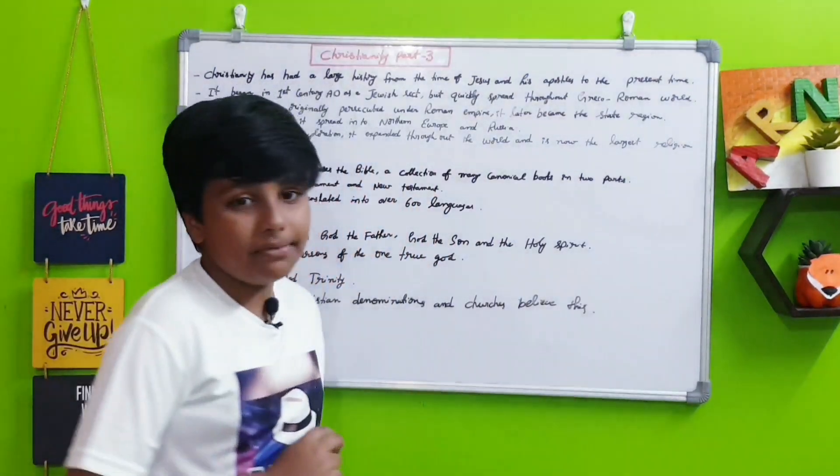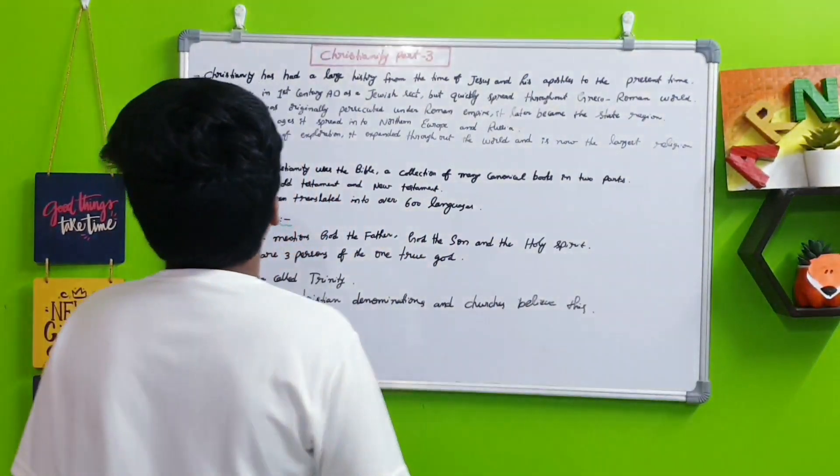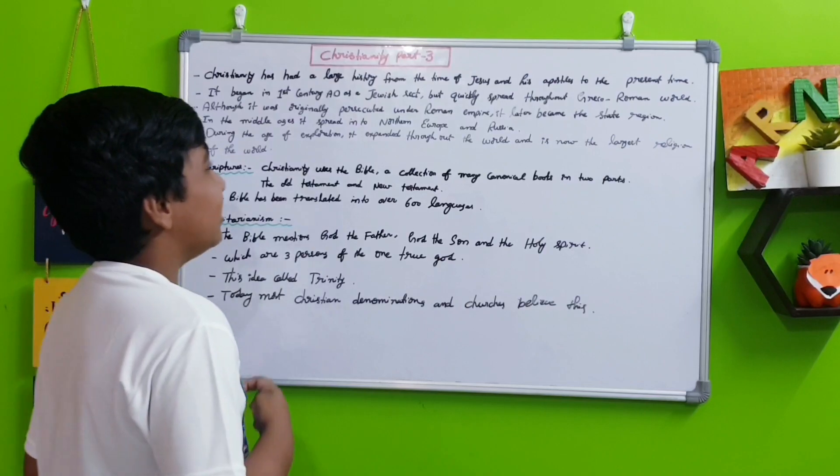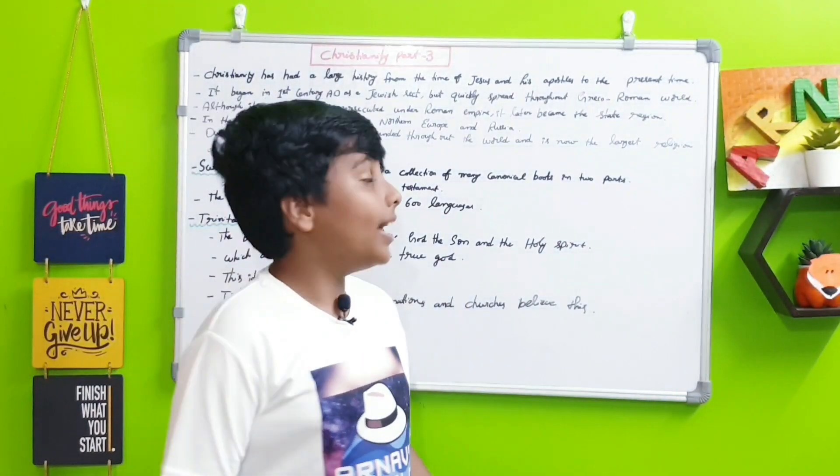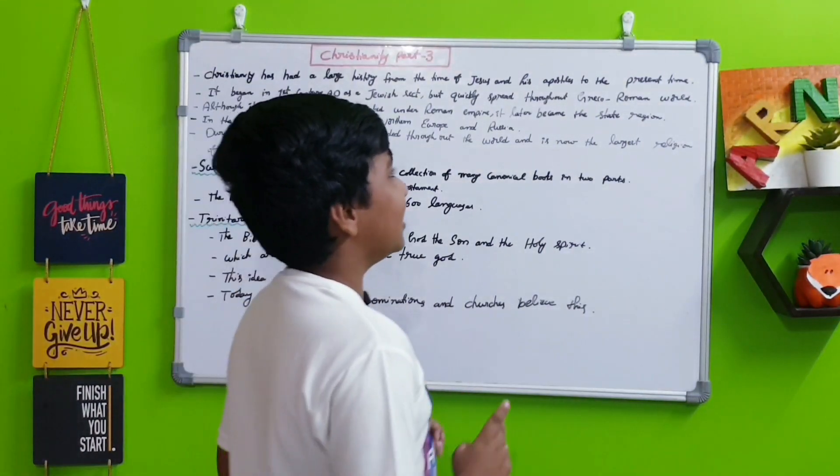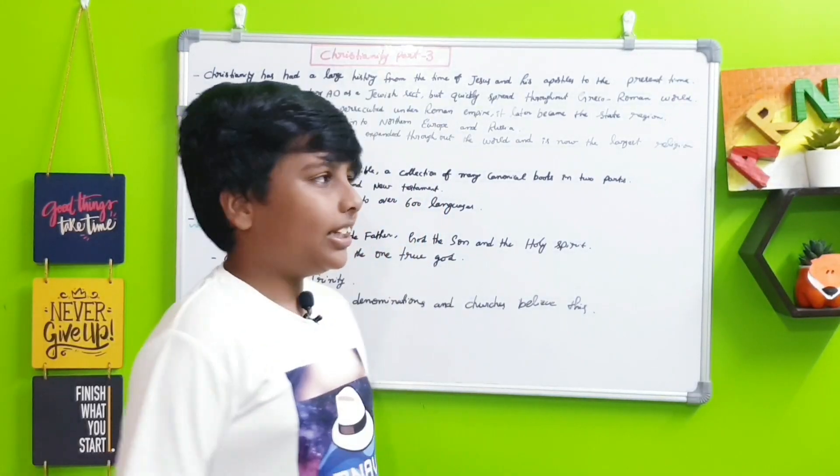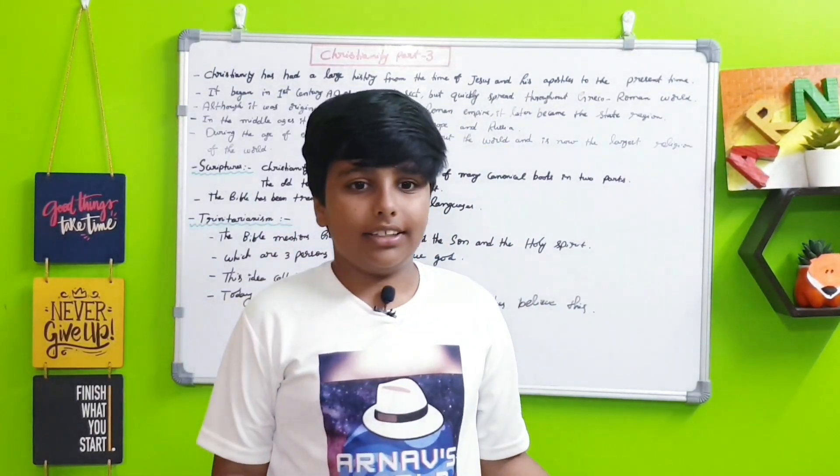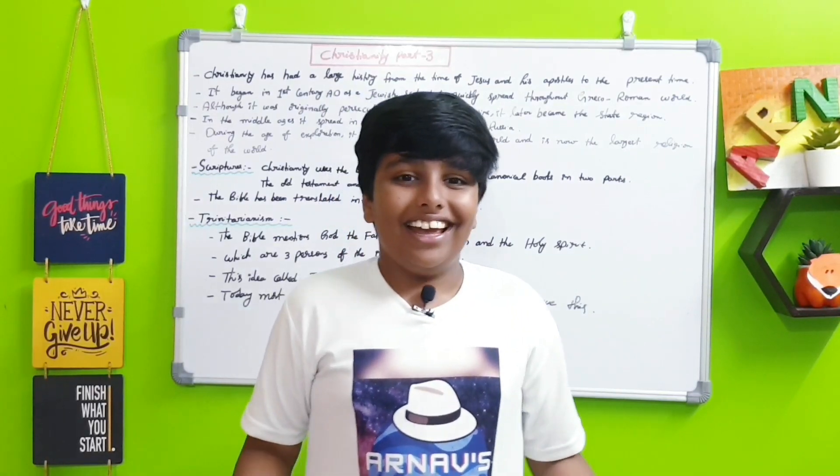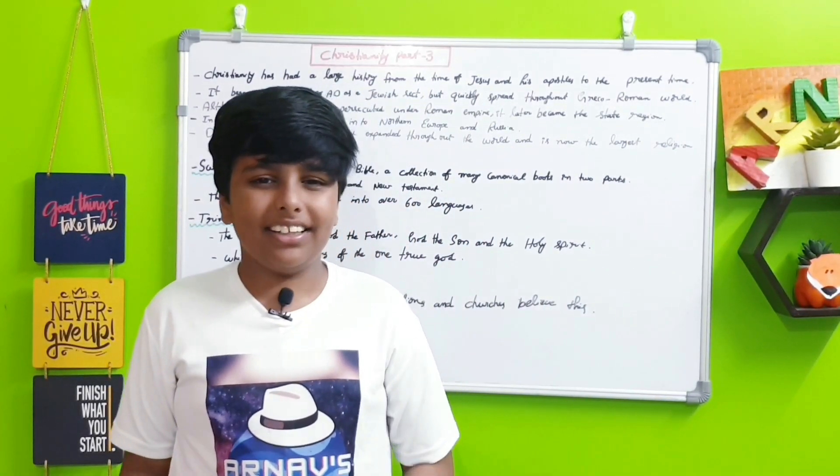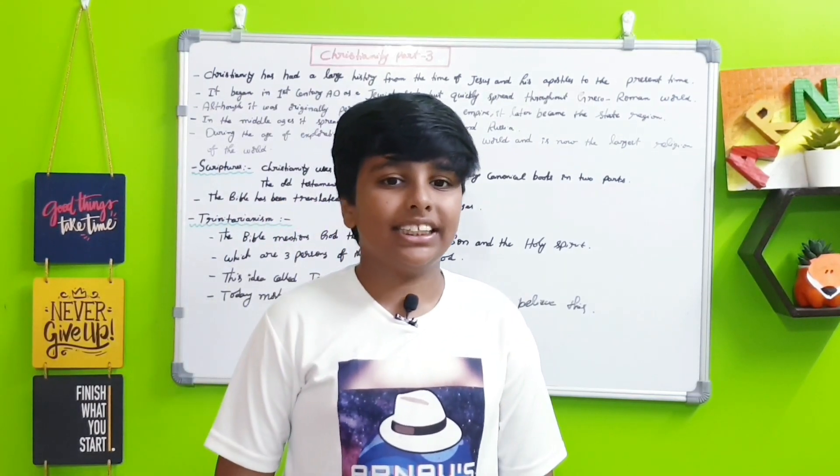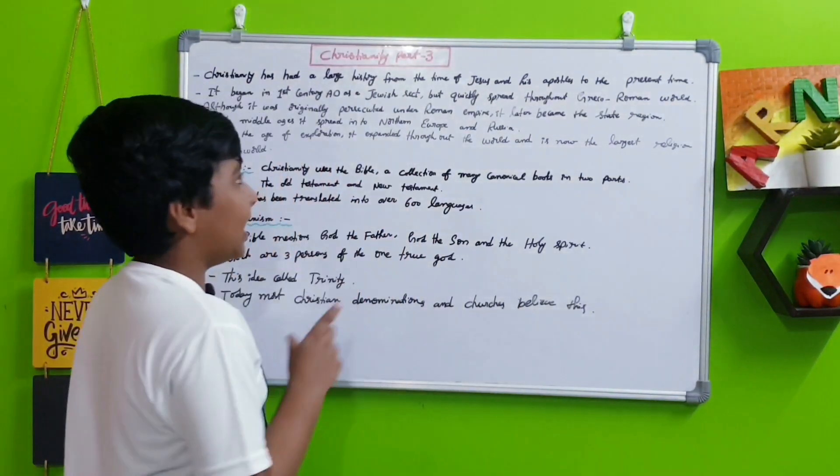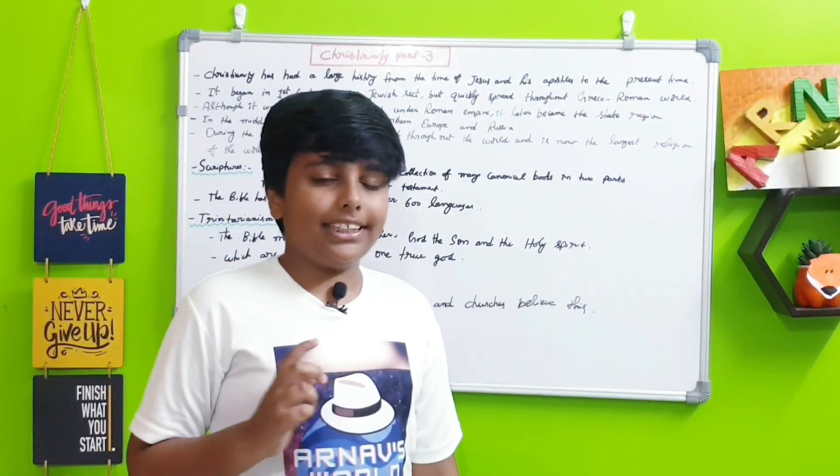Christianity has had a large history from the time of Jesus and his apostles to the present. This history is like sometimes it got banned, sometimes not banned, sects were forming, many things happened over its history from that time when Christianity was still a sect to the present day where it is a religion worldwide.